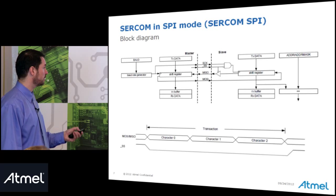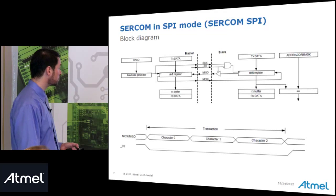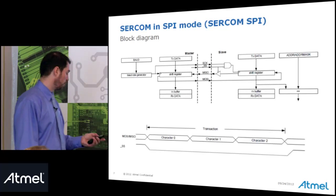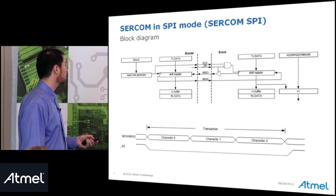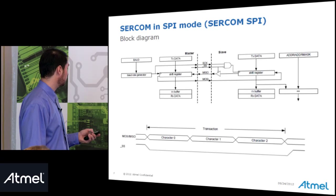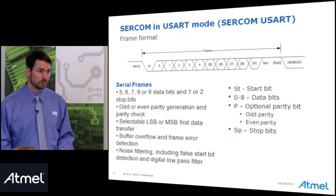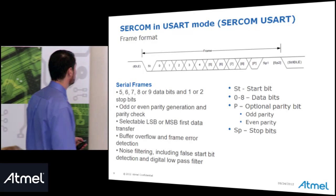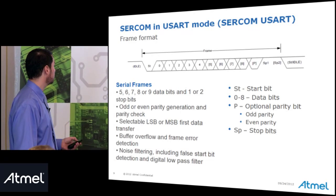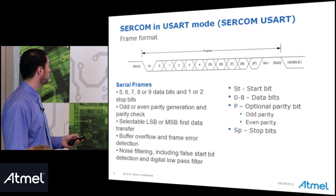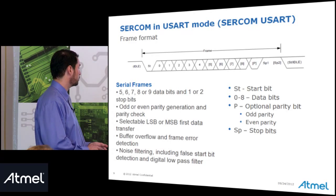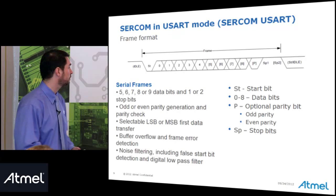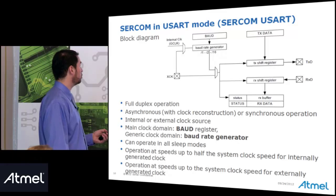Looking at the basic SPI protocol overview, once the slave select line goes low, data can be transferred on the MISO and MOSI lines. Now looking at UART — the UART supports flexible serial frames: five, six, seven, eight, or nine data bits; one or two stop bits; odd or even parity generation and parity check; buffer overflow and frame error detection; and noise filtering including false start bit detection and a digital low-pass filter.